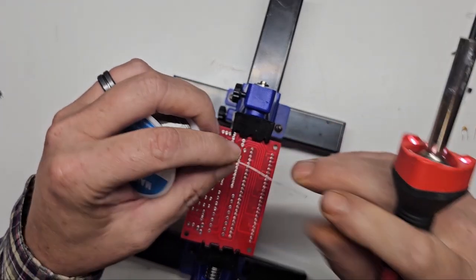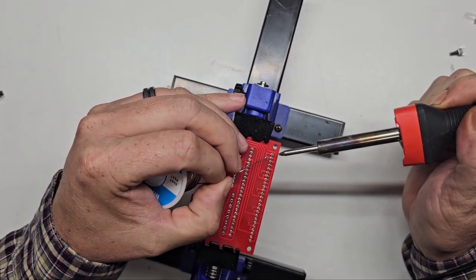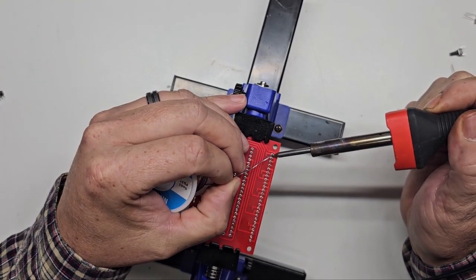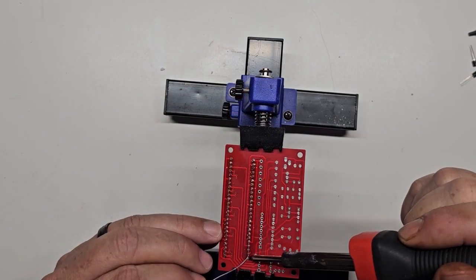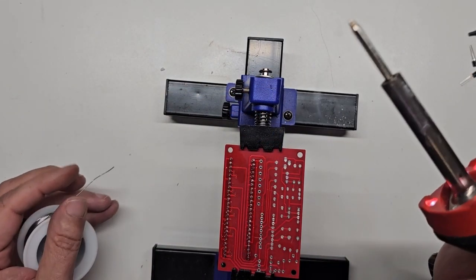I then flip the board over and start soldering them in place. After all the pins are soldered I inspect my solder joints and trim the excess leads.